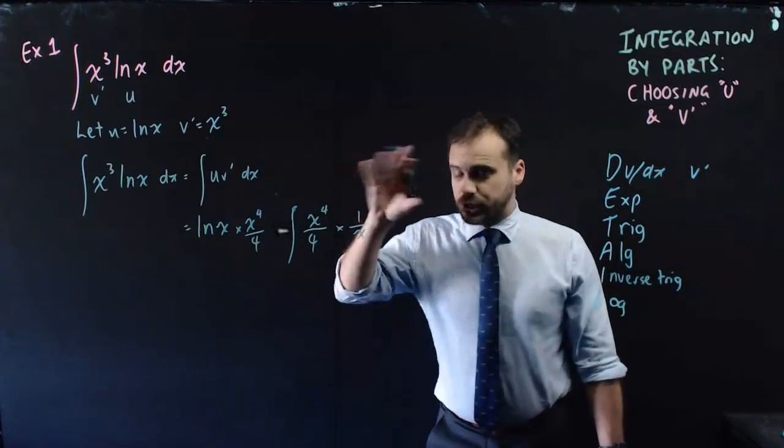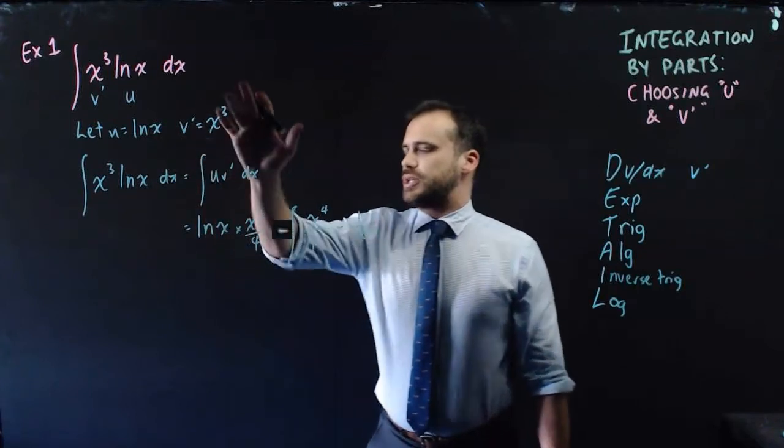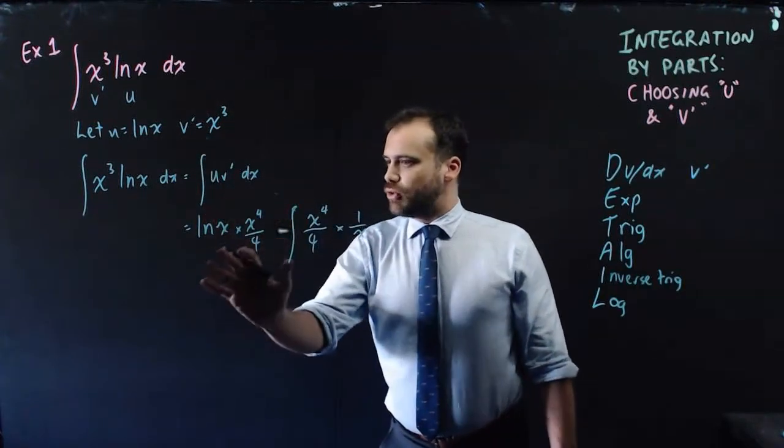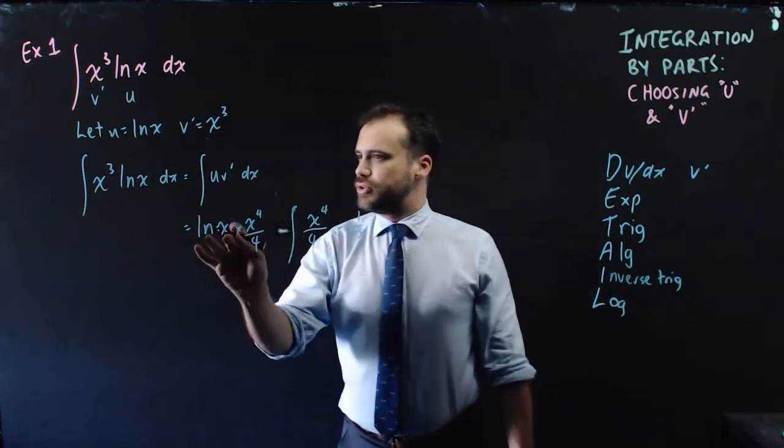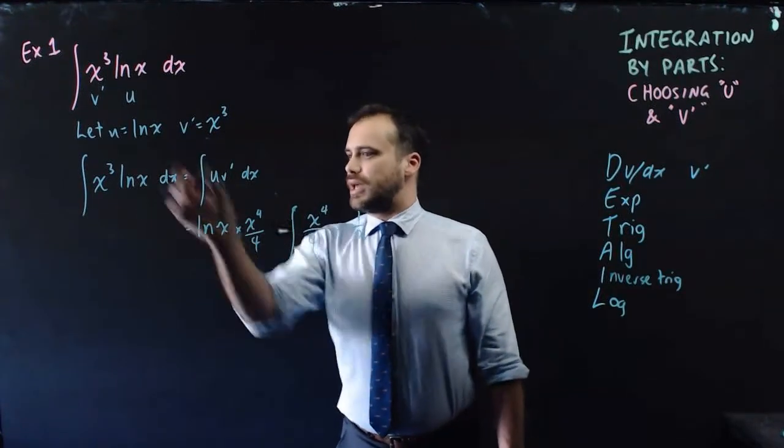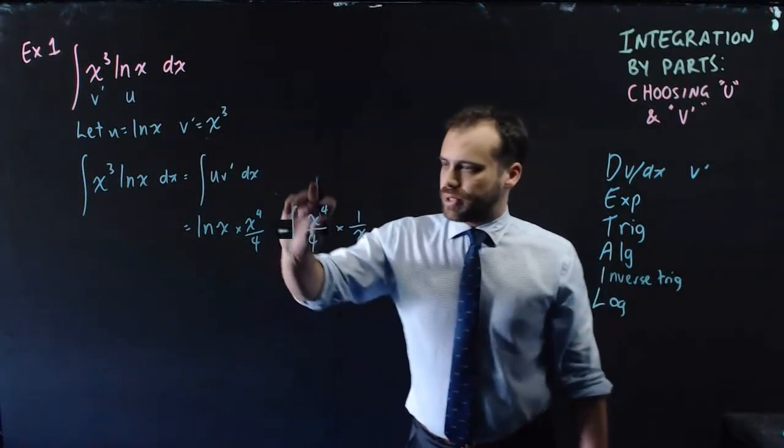Now, if we jump to what actually happens when you do that, what you get is u equals ln x, v dash equals x cubed. You put it into your formula and you get uv, so u ends up being ln x, and v ends up being the integral of that, x to the 4 over 4, plus,